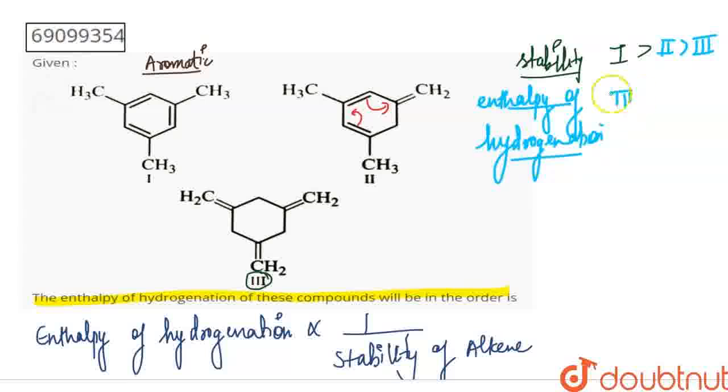So this is the order of hydrogenation: the third is the most, then the second, and the first is the least. So this is your final answer, thank you.